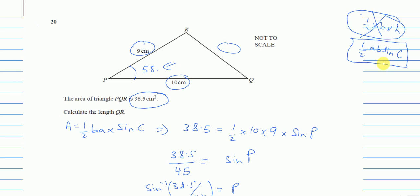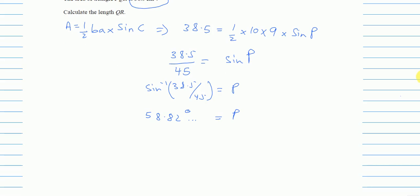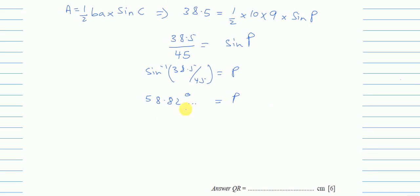And what can we use when we have three sides and one angle? We can use the cosine rule. So the cosine rule is, the side we are looking for we call it a squared equals b squared plus c squared minus 2bc cos A.